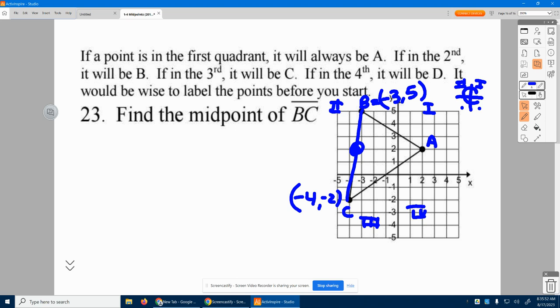So let's add our X values together, negative three plus negative four, and divide by two. The middle of our Ys, five plus negative two, negative two, there was your five, divide by two.